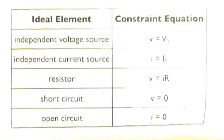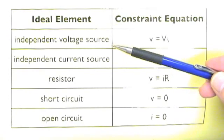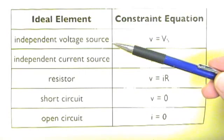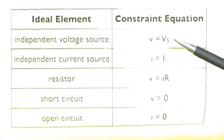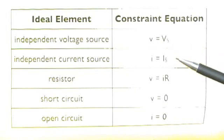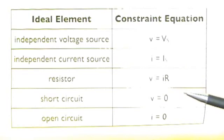Here's a summary. For the independent voltage source, ideal constraint is that V equals a constant value. Likewise, for the independent current source, and for the resistor V equals IR. And we have these equations for the short circuit and open circuit.